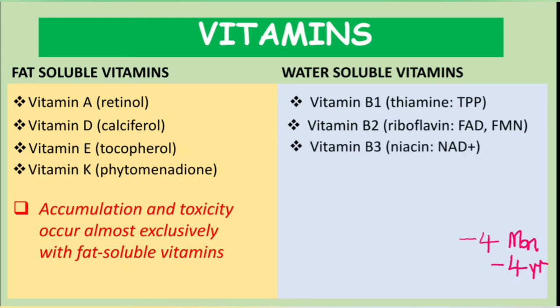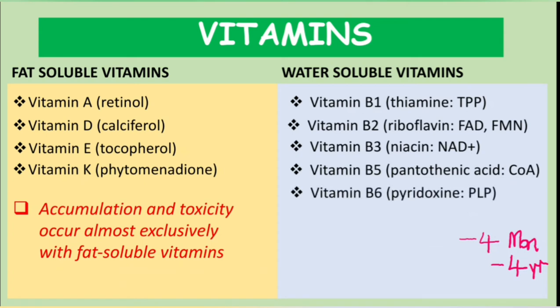The next is vitamin B3, also known as niacin, and its coenzyme is NAD+. There is no vitamin B4, so we skip to vitamin B5, also known as pantothenic acid, whose coenzyme is coenzyme A. Then vitamin B6, also known as pyridoxine, whose active form is pyridoxal phosphate or PLP.